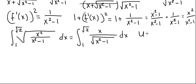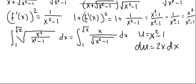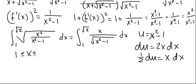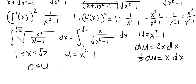We'll evaluate this by substitution. Let u equal to x squared minus 1. Then du equals 2x dx, so one half du equals x dx. When x is between 1 and square root of 2: when x is 1, u is 0; when x is square root of 2, u is 1. So u ranges from 0 to 1.